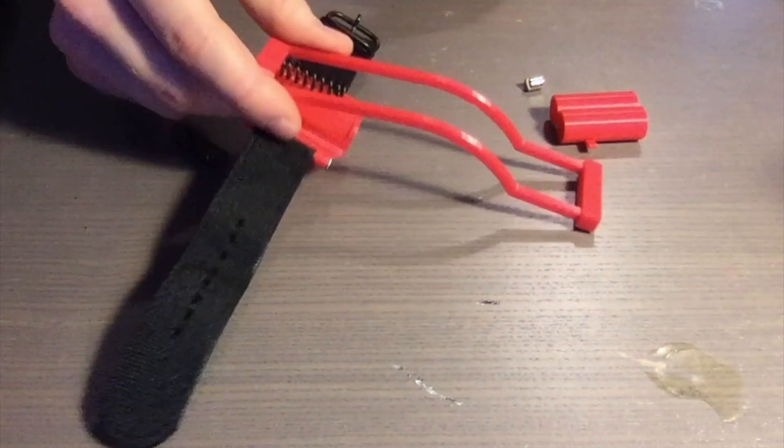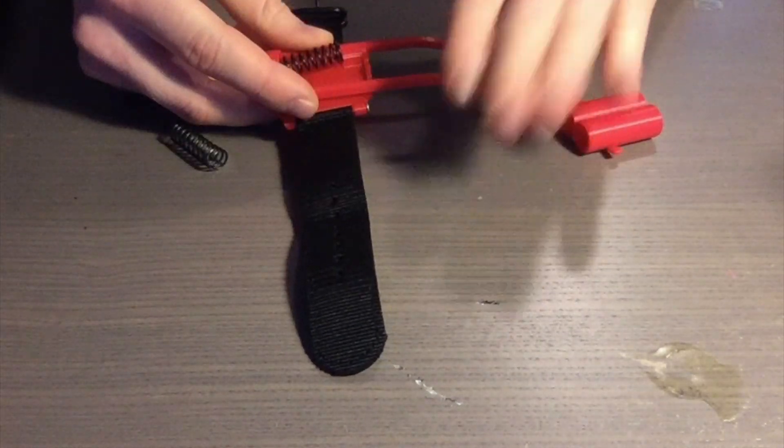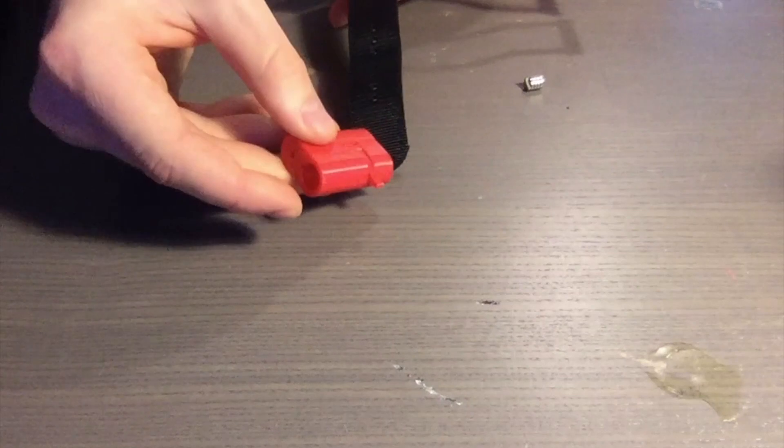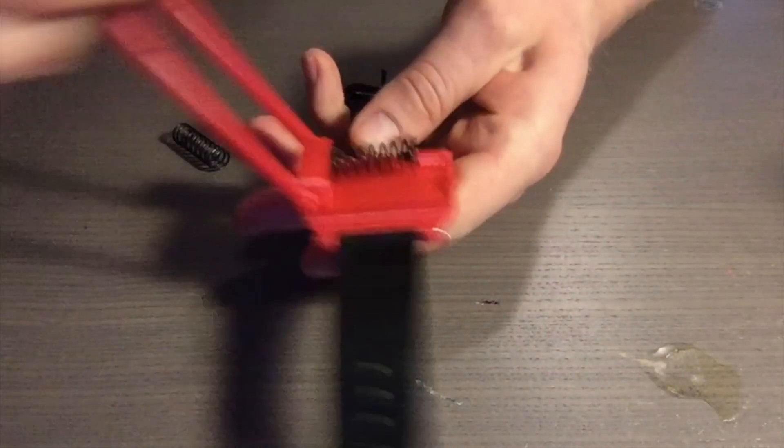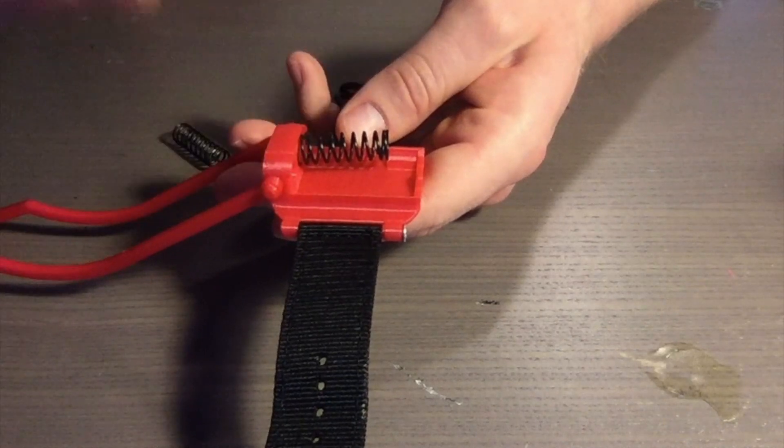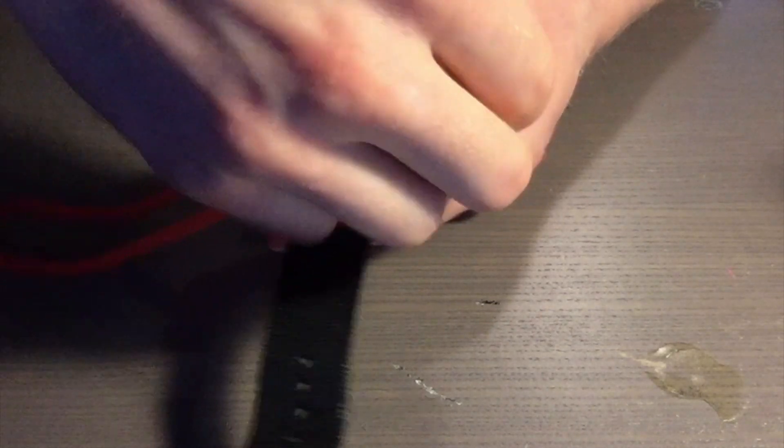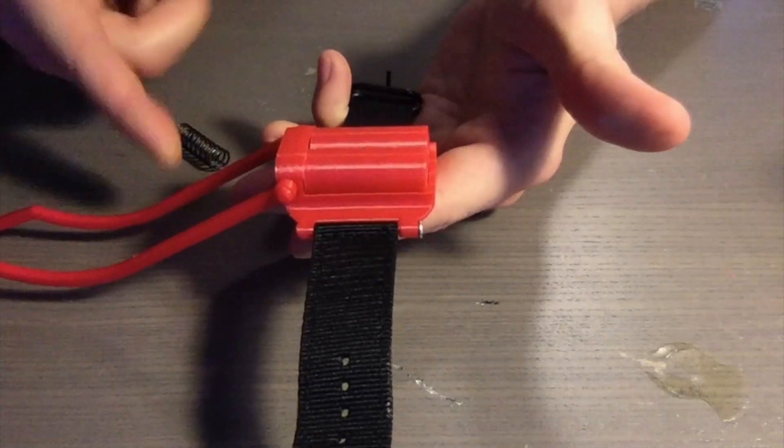This is the model we're going to be building today. It's just the two basic parts: this is the web shooter and this is the cartridge. You can see web shooter, cartridge, just like that.